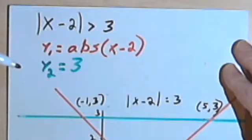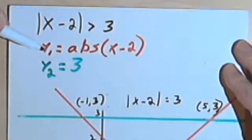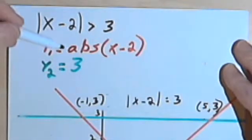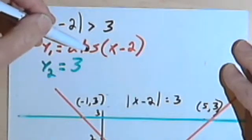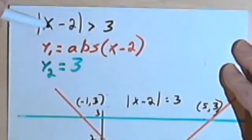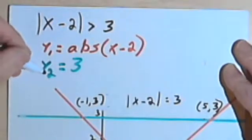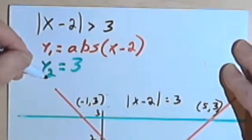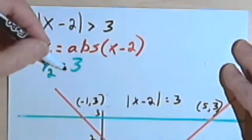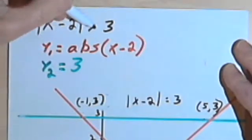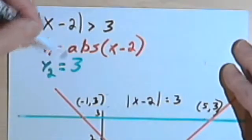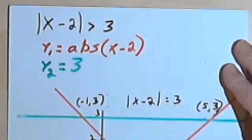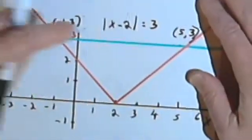Now the graph is going to look exactly the same. I'm going to have y₁ equals the absolute value of x minus 2 — that was the left side of my inequality — and y₂ equals 3, because the right side of my inequality was a 3. And now I'm going to look at the graph.